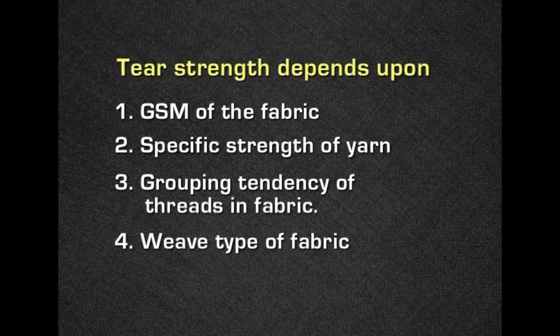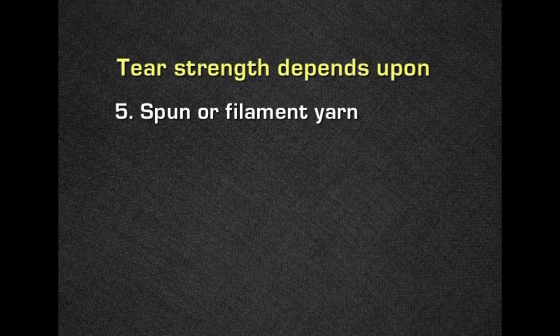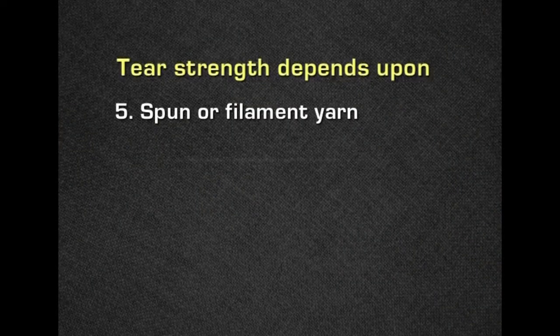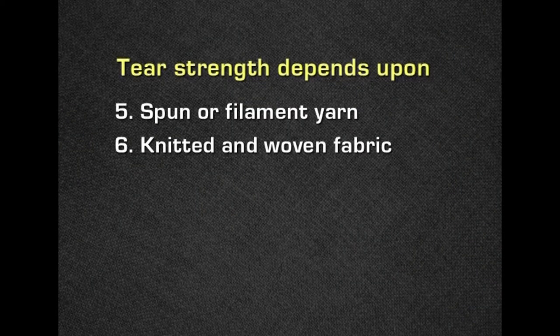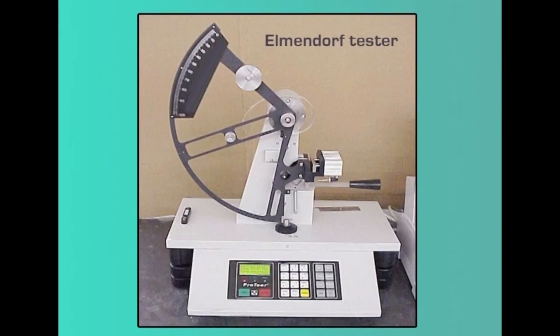Grouping is more prominent when yarns are smooth and can slip over one another, so in a matt weave or basket weave, grouping of threads is more common, giving higher tear strength compared to plain weave fabrics. Plain weave has the lowest tear strength compared to other weave types. Spun yarns have lower tear strength than filament yarns. Woven fabrics are easier to tear than knitted fabrics. Certain finishes such as wash-wear, drip-dry, or crease-resistance treatments generally reduce the strength of the yarn.